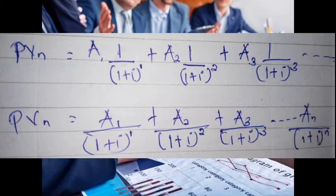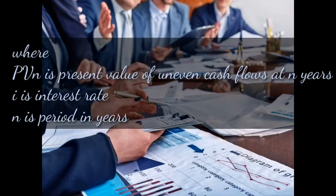The first formula: present value equals A multiplied by 1 divided by (1 + i) to the power of n, applied for each year. The second formula: PV = A₁ / (1 + i)¹ + A₂ / (1 + i)² + A₃ / (1 + i)³, and so on up to the number of years given. Here, PV represents present value of uneven cash flows, i is the interest rate, and n is the period in years.